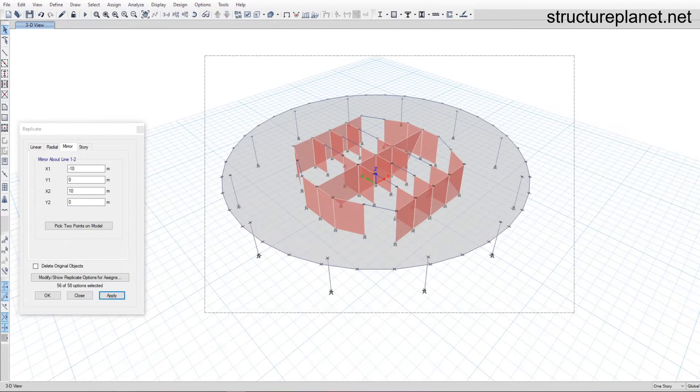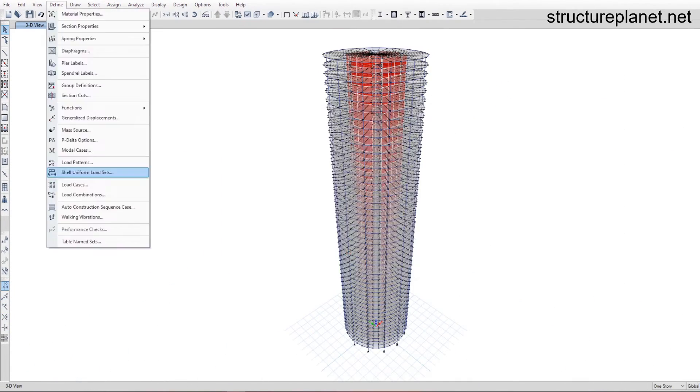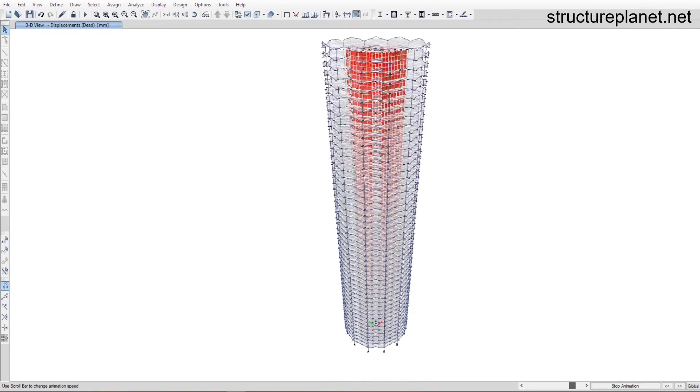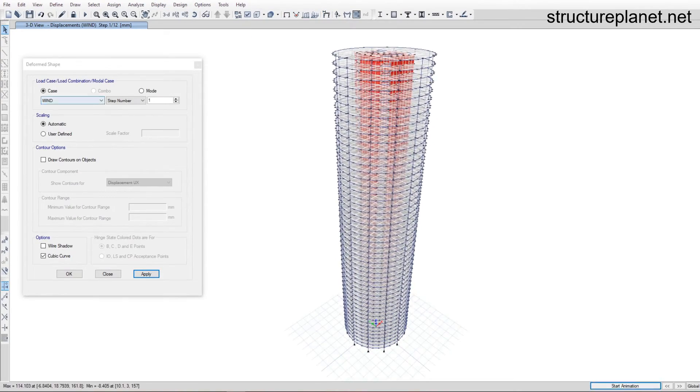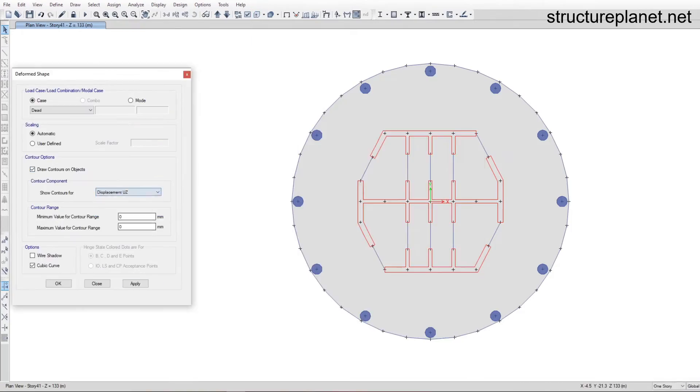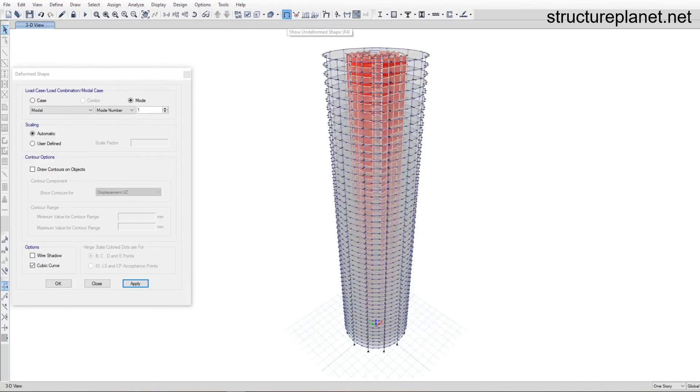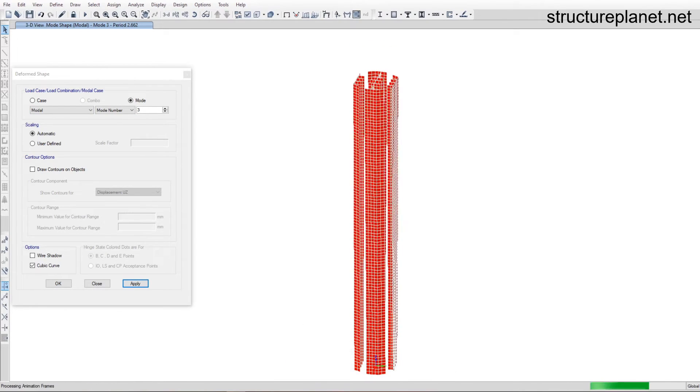They will then run the model as engineers call it which is when the program creates a representative mathematical model of the building and solves it against the applied loads to get the deformations, base reactions and elements internal forces. Engineers then verify the outputs by looking for inconsistencies in the results and repeat the modeling, analysis and design stages until the results are consistent with their engineering judgment and expectations.